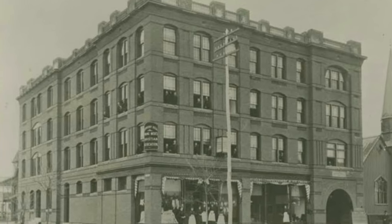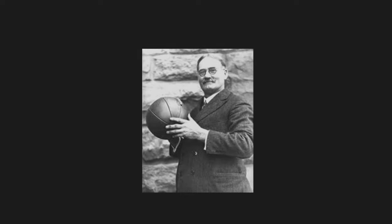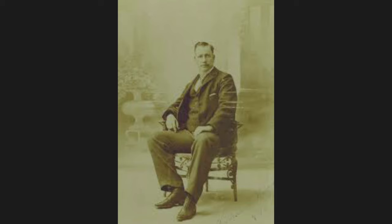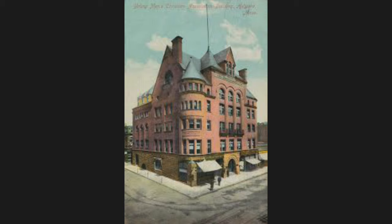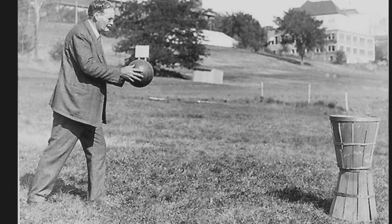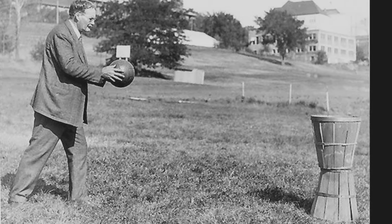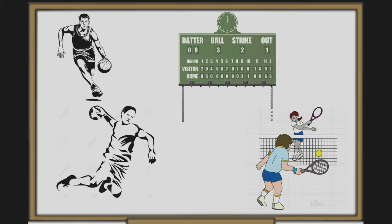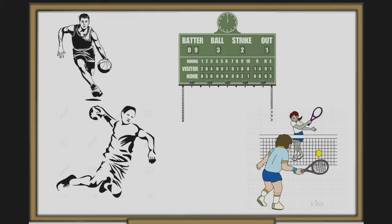Morgan had attended the YMCA's Springfield College, where he had met James Naismith, the inventor of basketball. After graduating, Morgan continued to work for the YMCA and soon took the position of Director of Physical Education in nearby Holyoke. Having noticed that the speed of basketball made it too challenging for weaker men and older athletes, Morgan set about devising a new game, keeping in mind his goals of creating a game for all age levels and strengths.